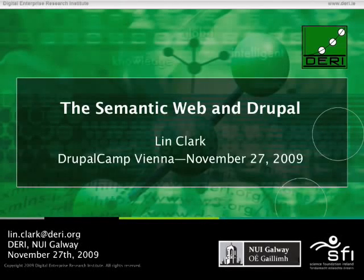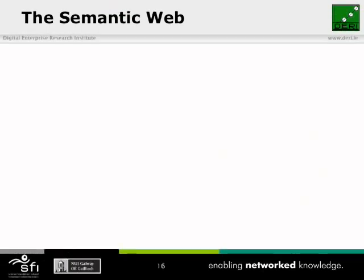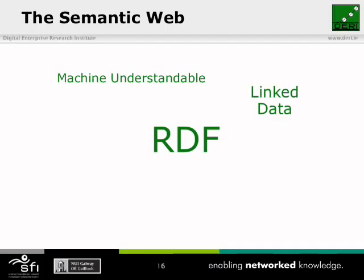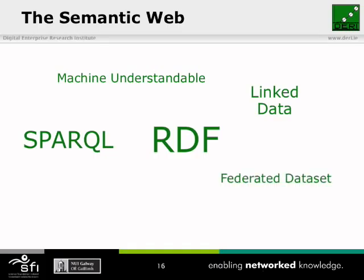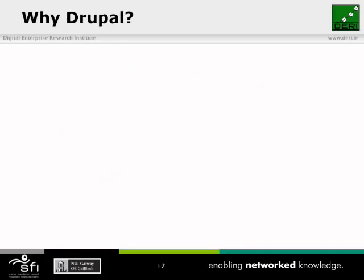In the first part of this talk, I introduced the semantic web and some of the benefits that you'll see from it. I talked about how the semantic web makes the information on the web understandable to machines, not just humans, by using the Resource Description Framework to link data together. Once you have all of this information linked together, you can find it by using SPARQL, the query language for RDF, in federated datasets distributed across the entire web in the giant global graph, turning the web into one big database.